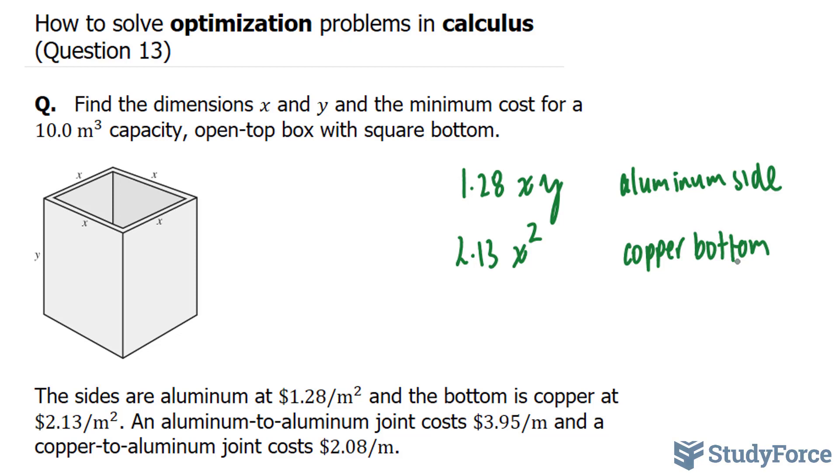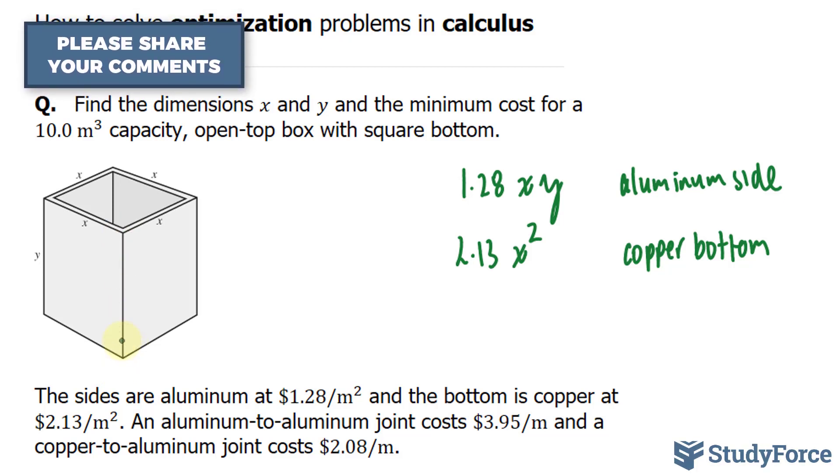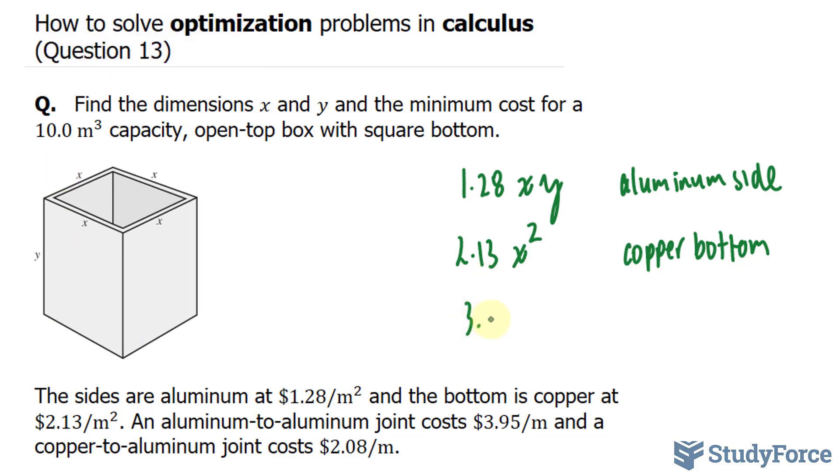We're also told the cost of one aluminum to aluminum joint. If this is an aluminum face and this is an aluminum face, the joint here costs $3.95 times y. So $3.95 times y represents the aluminum to aluminum joint.